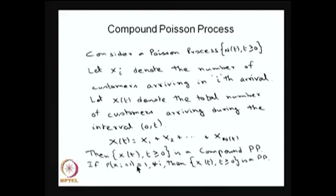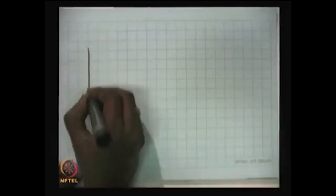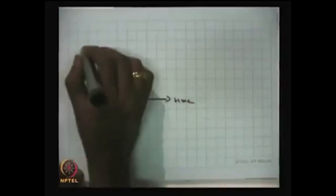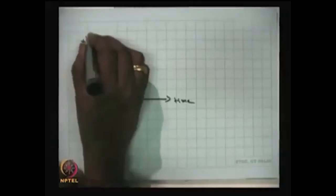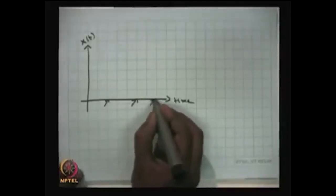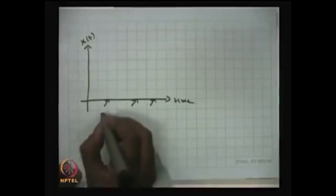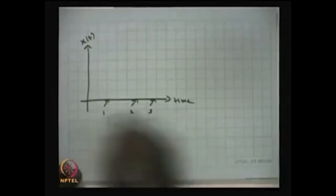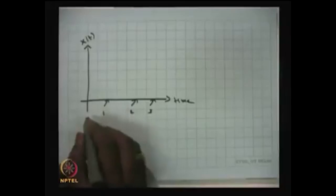Suppose the x_i's are discrete random variables with possible values 0, 1, 2, and so on; then X(t) is a compound Poisson process. We can draw a simple sample path for it: the horizontal axis is time and the vertical axis is X(t). The arrival time points can occur anywhere in continuous time, which is why this is called a discrete-state continuous-time stochastic process.